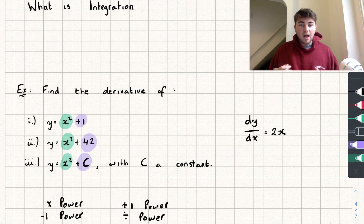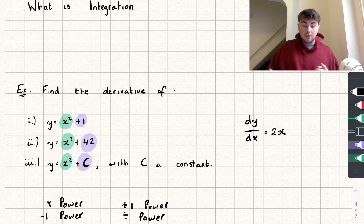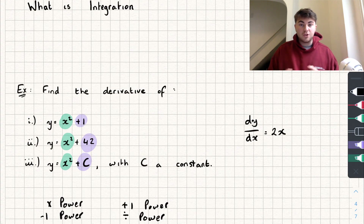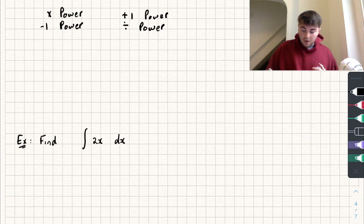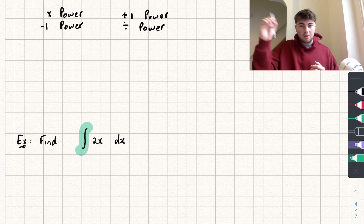When we differentiated the constants they all got lost — they all go to zero. So when we integrate, we have to take into account that there may be a constant that disappeared through differentiation. When we integrate something, we add on what's called a constant of integration — that represents the number that could have been lost — and we can find it later, which will be my next video.